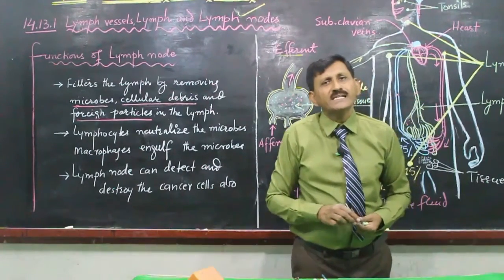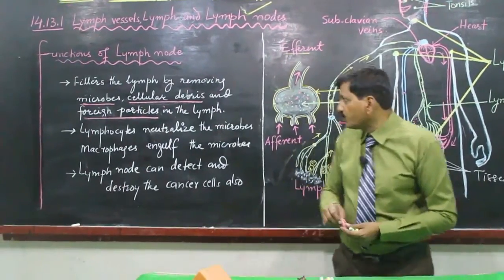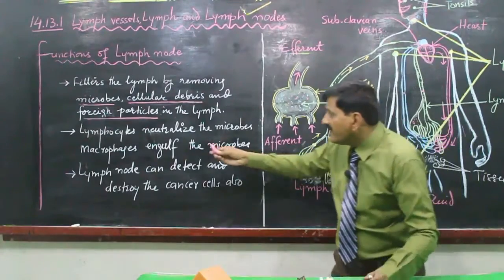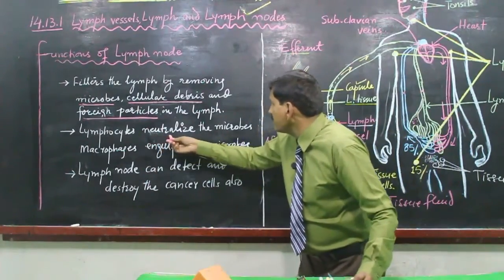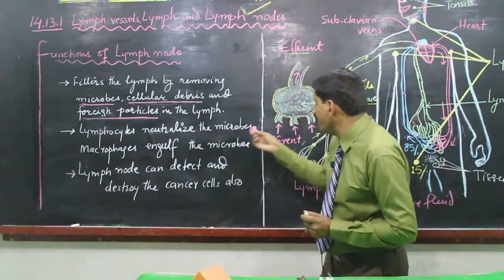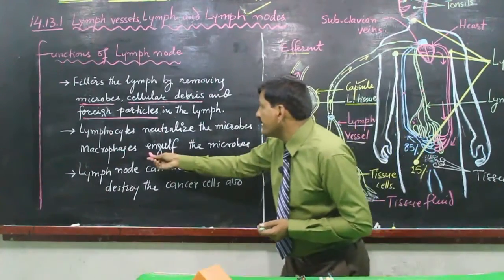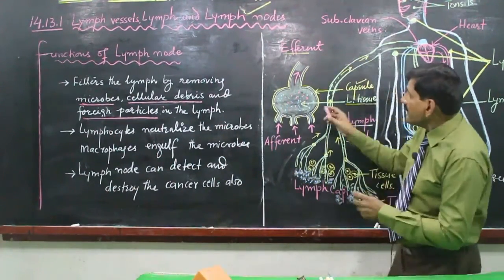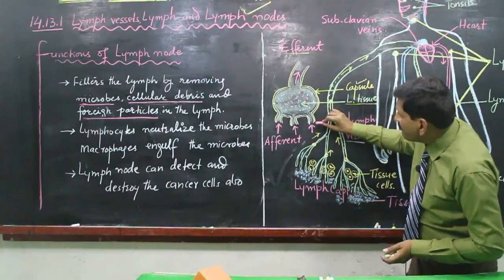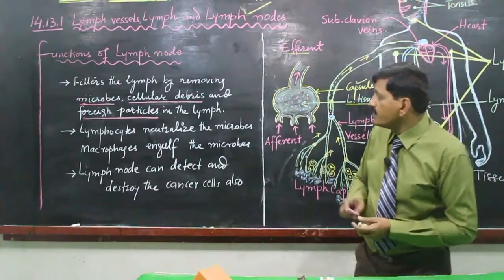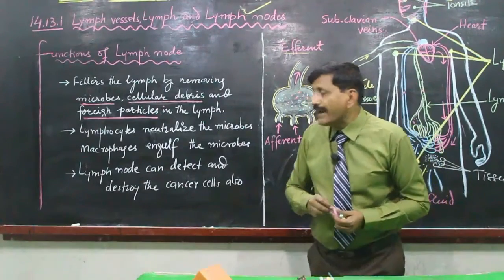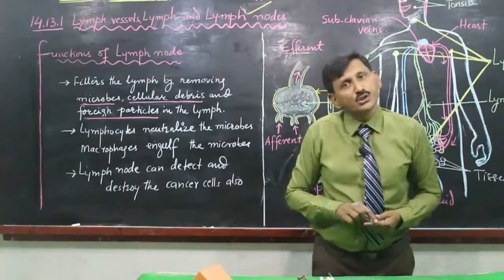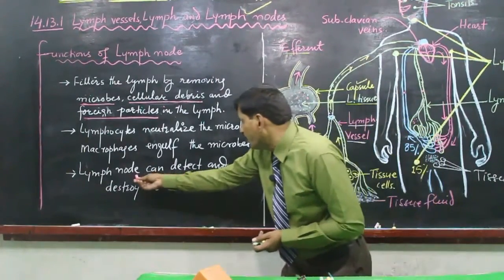Inside the node, the lymphoid tissue contains lymphocytes and macrophages that filter the lymph. Lymphocytes neutralize the microbes and macrophages engulf them. Additionally, when lymph passes through the nodes, cancer cells can also be detected and destroyed.